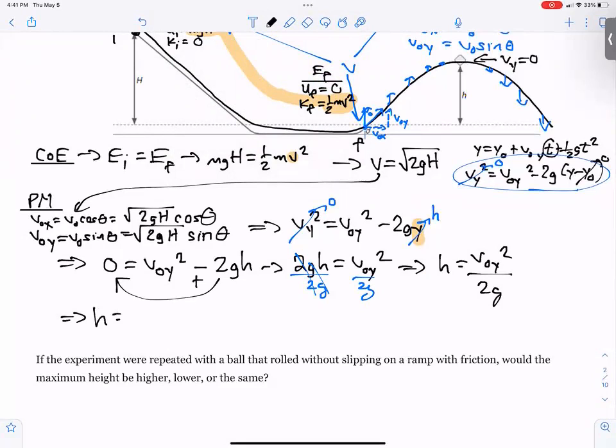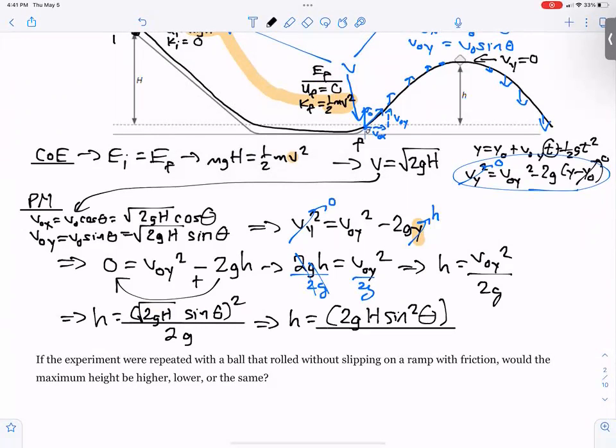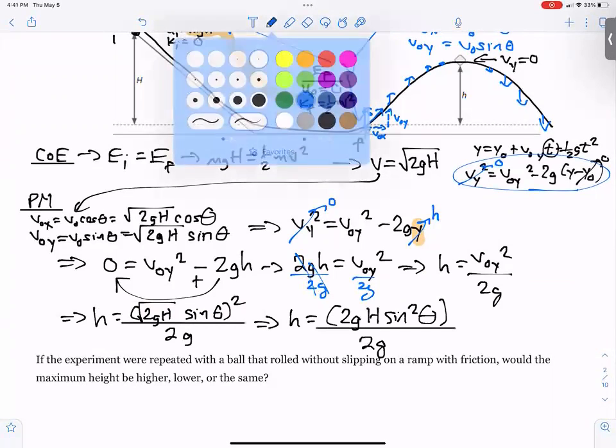v naught y was this value. So we're going to go the square root of 2gh sine theta, and we're going to square that, over 2 times g. When we square all of this, the square cancels the square root, so we get 2gh and then sine squared theta divided by 2g. You all can see that 2g will cancel.